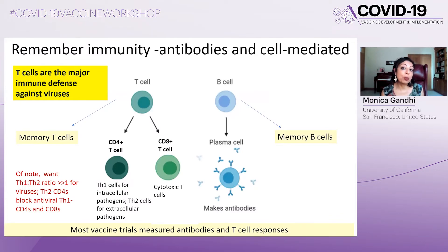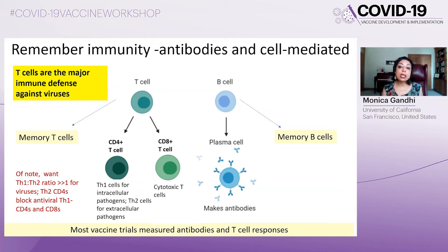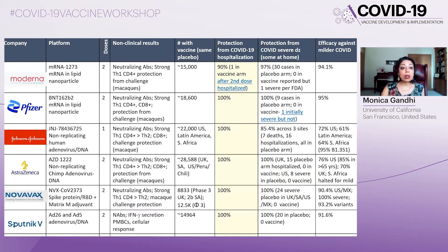Before we even think about how these protect us from infection, we have to remind ourselves what immune responses are elicited by these vaccines. First, B-cell responses are elicited, which create antibodies. The second type is T-cells, our most enduring form of protection against viruses. T-cells can be divided into CD4 cells, which are helper cells, or CD8 cells, which are cytotoxic or killer cells. Importantly, all of our vaccine candidates give us both neutralizing antibody responses and strong T-cell responses.